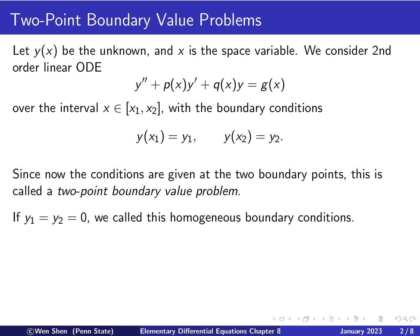Let's introduce another concept: homogeneous boundary conditions. The boundary values are y1 and y2 at x1 and x2. In the case where these two values are zero, the boundary condition is called homogeneous.